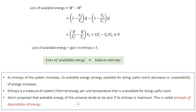Since available energy decreases when entropy increases, Kelvin proposed that the available energy of the universe tends to zero when its entropy is maximum. This is known as the principle of degradation of energy.